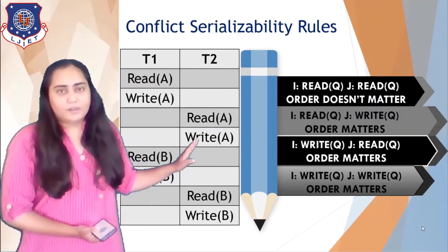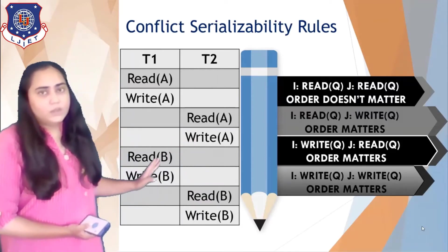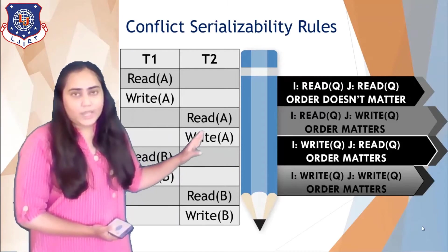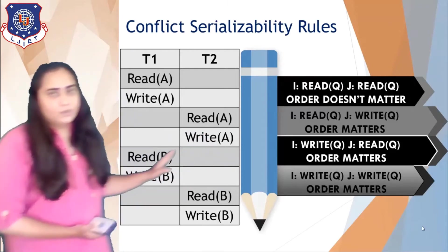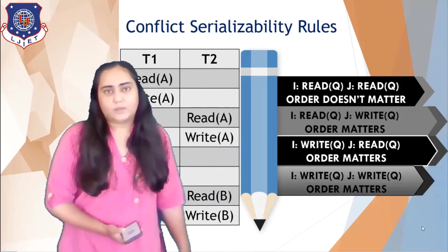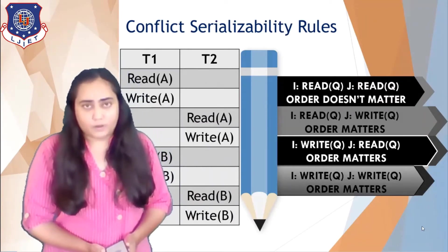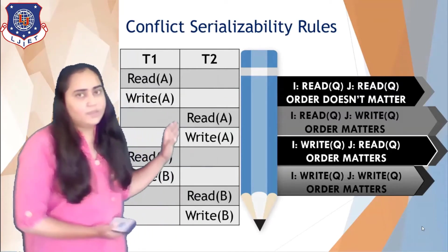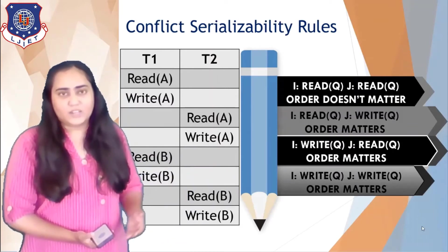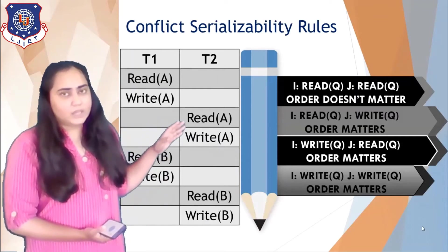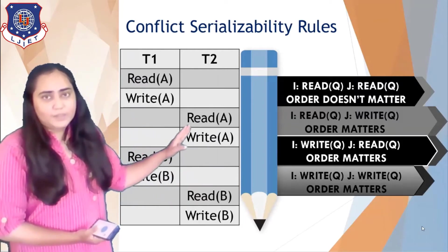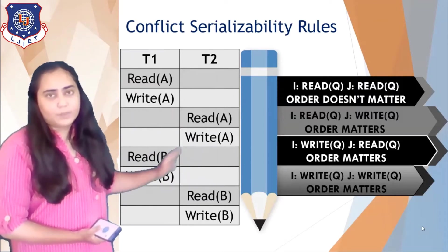Next I compare write A with the next operation, which is read B. Write A has variable A and read B has variable B — they are different, so none of the conflict rules apply. Because both transactions are working on different variables, their order doesn't matter at all and I can change their order. So I can bring write A down and read B up.